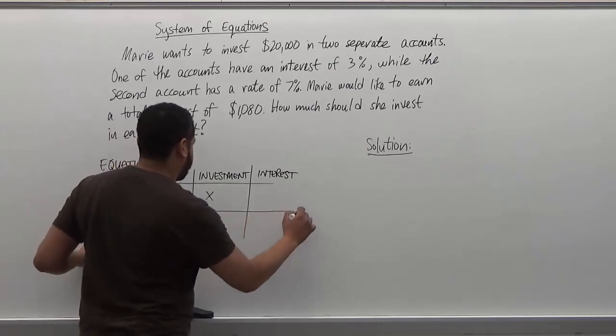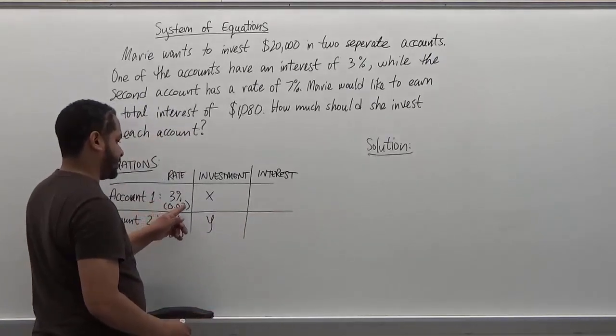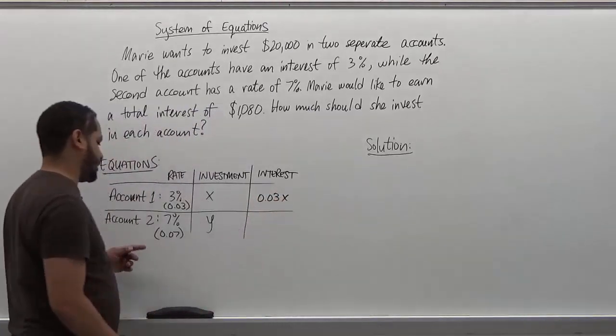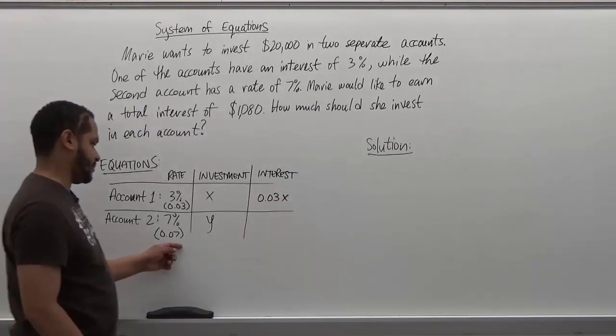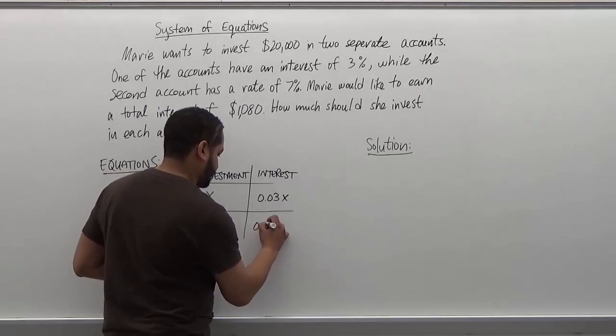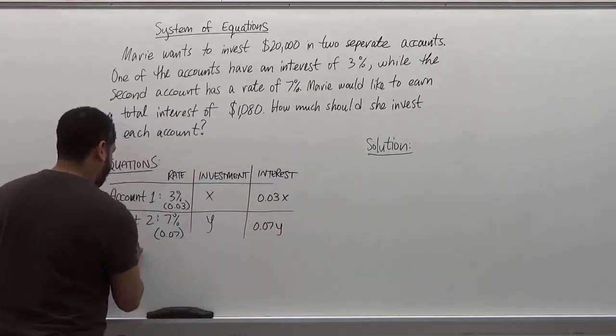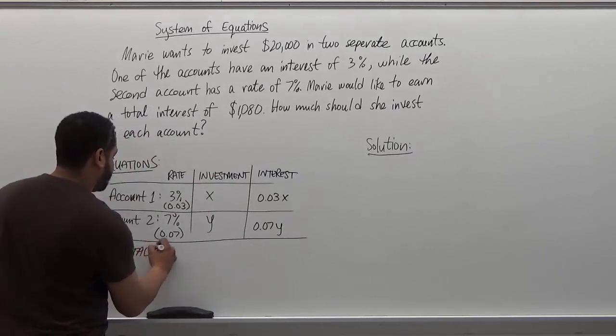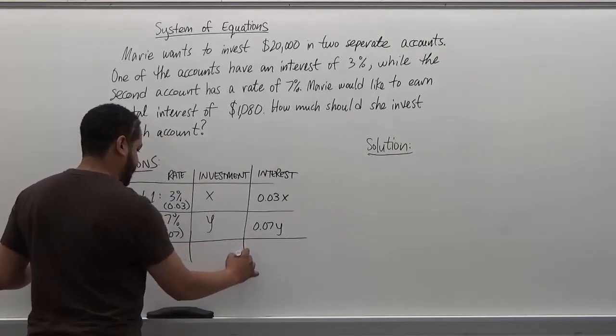So in account one the interest is going to be 0.03 times x. The interest in account two is going to be 0.07y. Now the totals here will give us the equations themselves.